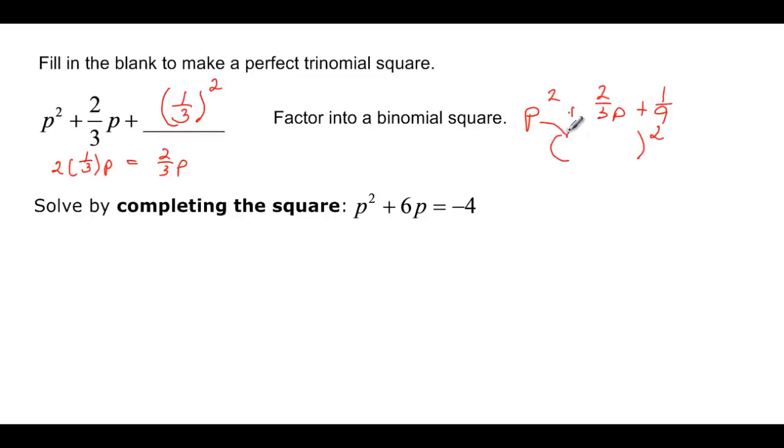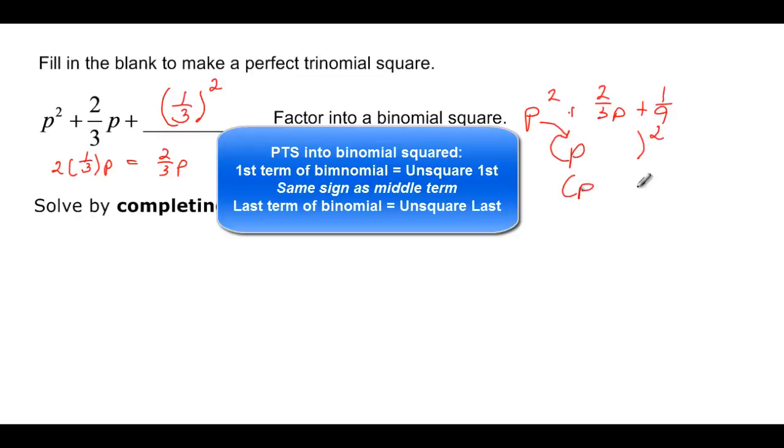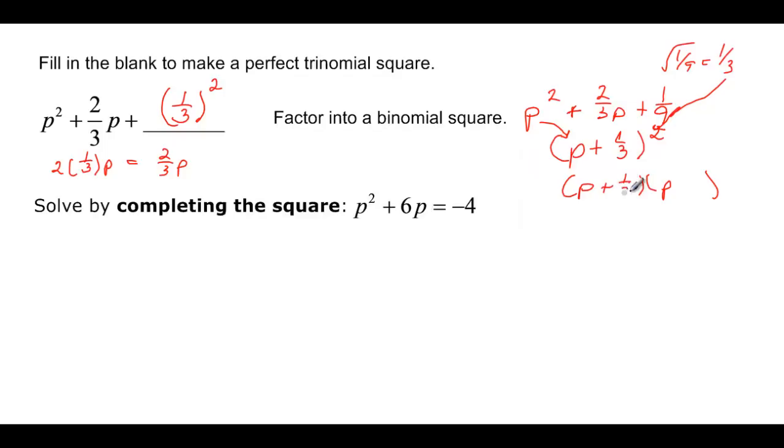And then it says factor it as a binomial square. Well, binomial squared, you unsquare this term to get your p, because it would be p times p. That's how you get your p squared. It's a plus in the middle here, so we have a plus. And you unsquare this. The square root of 1 ninth is equal to 1 third. And so we have 1 third here, because we'd have plus 1 third plus 1 third p squared. 1 third p plus 1 third p will give us our 2 thirds p. And 1 third times 1 third is our 1 ninth. So we have p plus 1 third quantity squared.